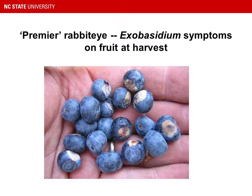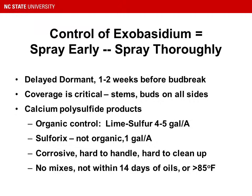Fungicides are effective for controlling Exobasidium, but there was some really nice work done at the University of Georgia that determined the fungus is overwintering on the surface of the plant. Control can be achieved at the delayed dormant stage — while the plant is not quite at bud break, if you get a thorough spray on with plenty of water using a calcium polysulfide product, a lime sulfur like Sulfurex, you can really reduce the amount of disease seen that year, even if that's the only spray you put on. We're really encouraging growers to use calcium polysulfide products at delayed dormant. Those products are corrosive, hard to handle and clean up; you can't really mix them with anything and have to be careful what you spray after them. But it's a one-time spray that seems to be quite effective.